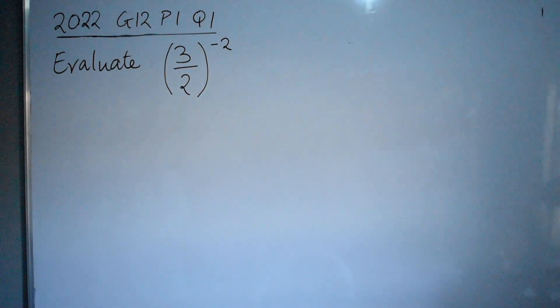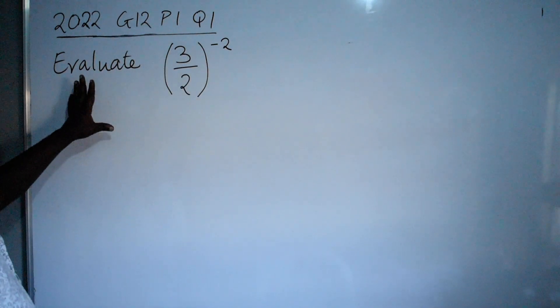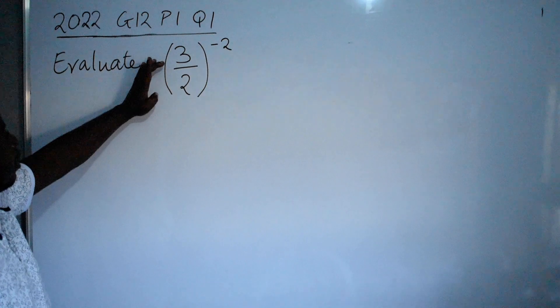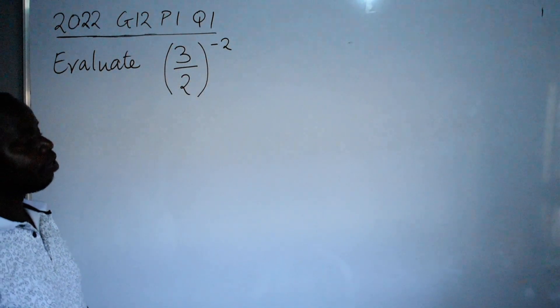Hello friends, let's look at the 2022 grade 12 paper 1 question 1, evaluate in brackets I have 3 over 2 to the power negative 2.